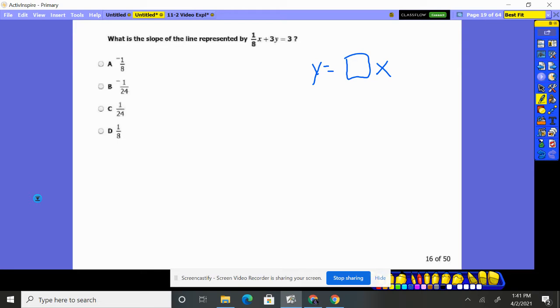So the first step we're going to do, let's just rewrite this: 1/8 X plus 3Y equals 3. We've got to move the X over, so we're going to subtract 1/8 of an X from both sides of the equation.